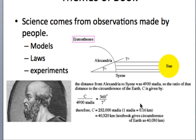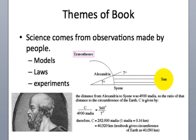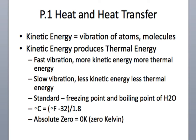Eratosthenes did this around 300 BC. Scientists make models and use math, laws, and experiments to explain the phenomena they observe. One important focus is avoiding supernatural explanations — there has to be a method, and a good approach involves debates and models.